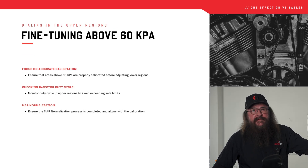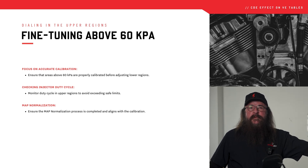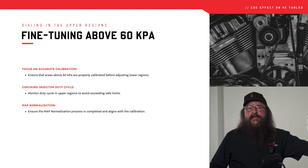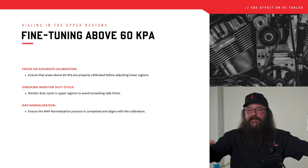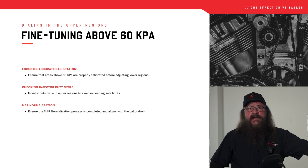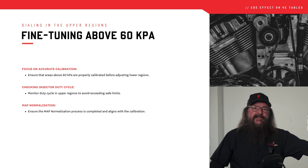Before making any adjustments to the CDE tables, it's essential to ensure that your upper regions — 70 kPa and above — are already accurately dialed in. The VEs are already sorted; this is where your engine is under more load. An accurate calibration here sets the foundation for adjustments in the lower regions. They may be a little higher, but in general should be a fairly smooth slope. Additionally, keep an eye on injector duty cycle — if you're running above 80%, you may want to look at using a larger injector. 80% is kind of the gold standard.